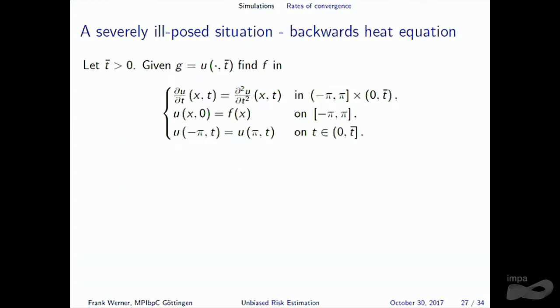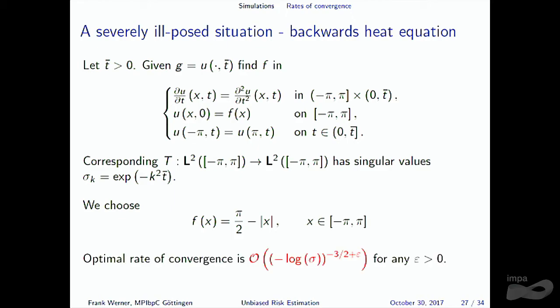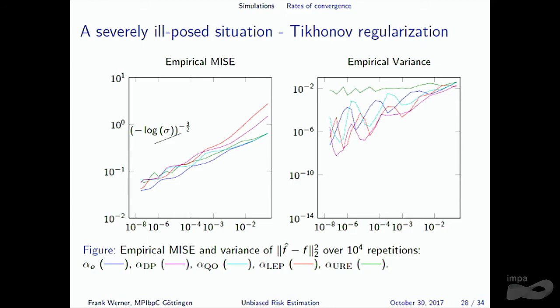The third example is the backwards heat equation: identifying the initial condition F from measurements of the state at time T̄. The singular values decay like e^{−k²}, making it even more severely ill-posed than satellite gradiometry. With the same hat function as the unknown, the optimal convergence rate is (−log σ)^{−3/2 + ε}. Results: the means appear acceptable for all parameter choice methods, but the variances behave strangely due to the fast singular value decay. The URE method again shows a variance that does not decrease to zero as σ → 0.